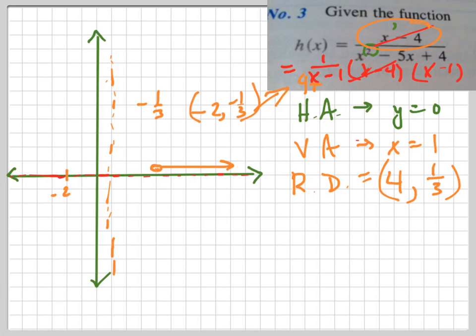We get negative 1/3 for y. So the point (−2, −1/3) gives us an idea of which way this graph is going. It's down here, which means as x approaches negative infinity, the graph approaches 0 from below.